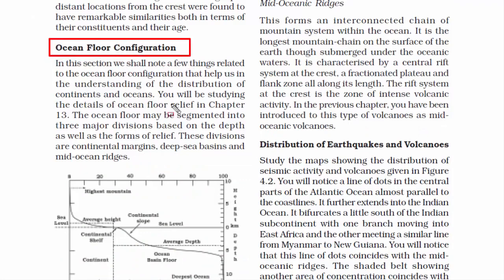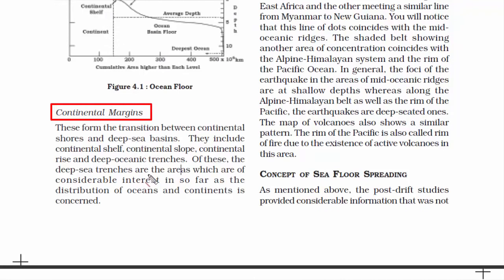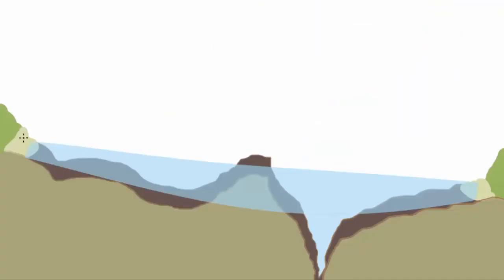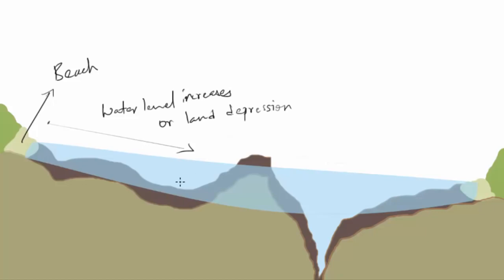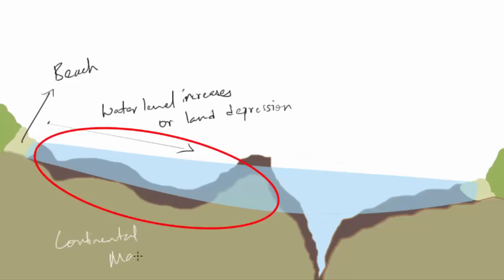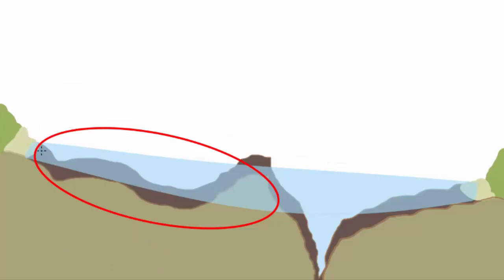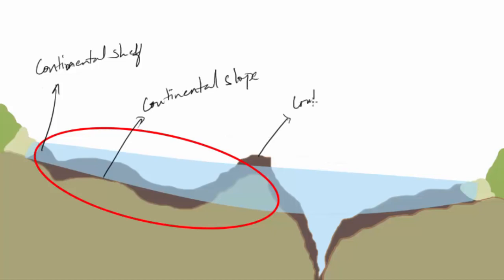Now we're going to read about ocean floor configuration. The entire ocean floor has been divided into three segments based on depth and relief. The first is the continental margin — the area between the continental shore and the deep sea basin. As you go further towards the sea from a beach, the land shows depression and water level increases until you reach the deep sea basin. The continental margin consists of the continental shelf, continental slope, continental rise, and deep oceanic trenches.